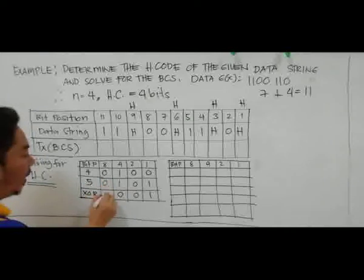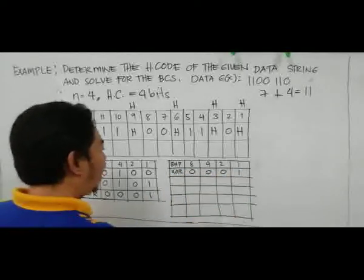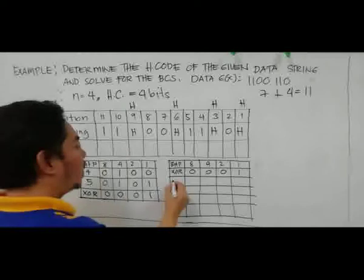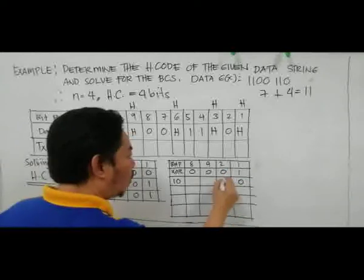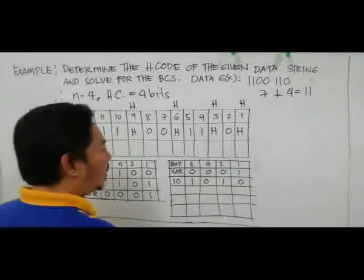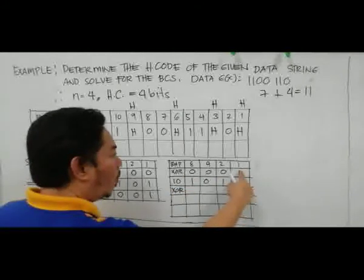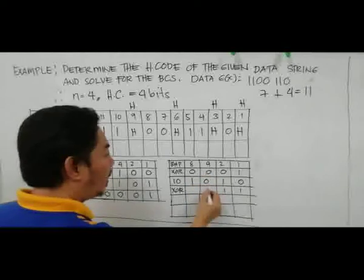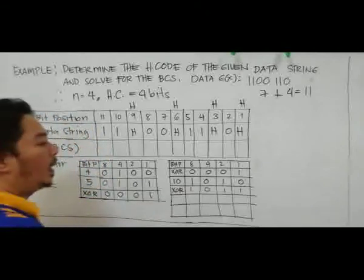Continuing the XOR operations: XOR with 1010 gives an intermediate result of 1010. XOR again: 1 XOR 1 = 0, 0 XOR 1 = 1, 1 XOR 0 = 1, 0 XOR 0 = 0. The running XOR result is updated step by step.